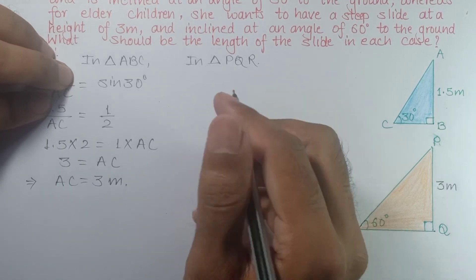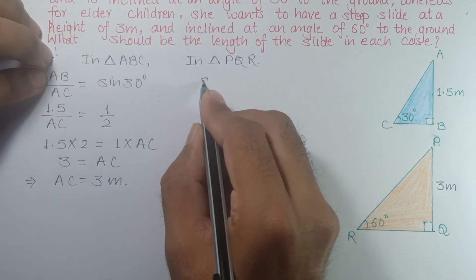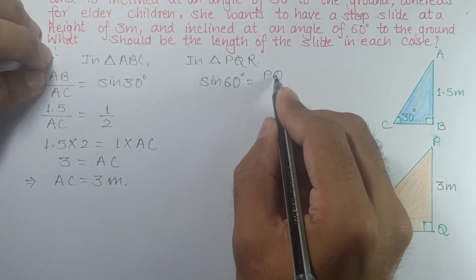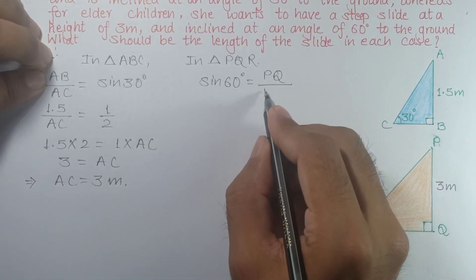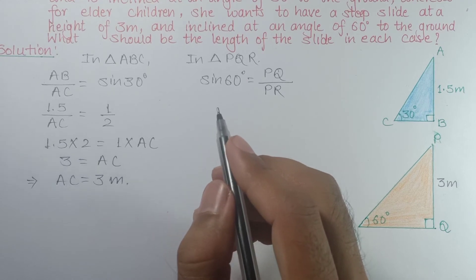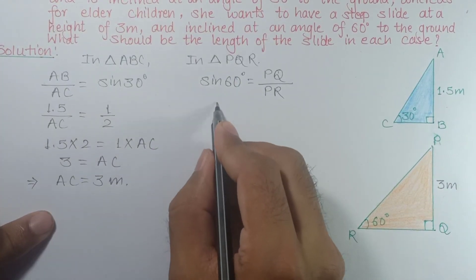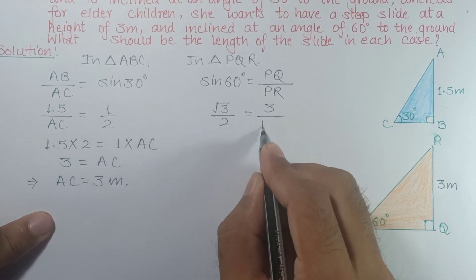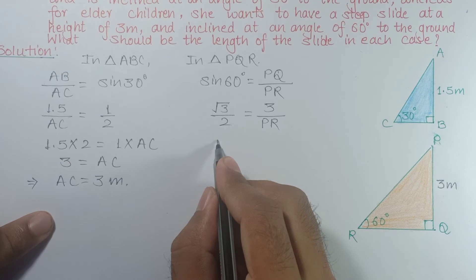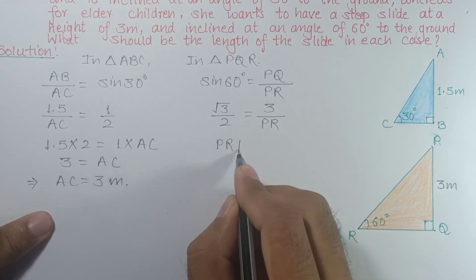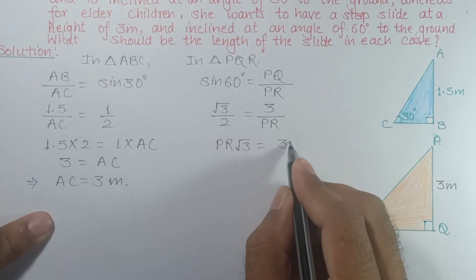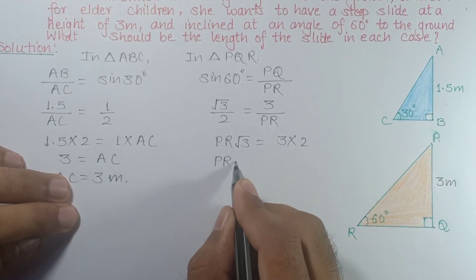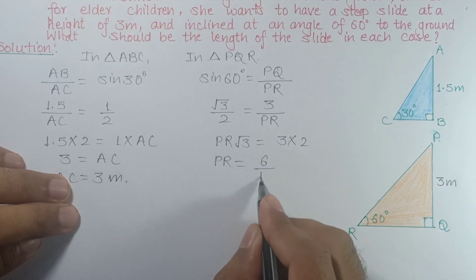Similarly for triangle PQR in the second case, we find sin 60°. sin 60° equals perpendicular upon hypotenuse, which is PQ upon PR. The value of sin 60° is √3/2. So √3/2 equals PQ — which is 3 — upon PR. Cross-multiplying: √3 × PR = 3 × 2, so PR = 6/√3.